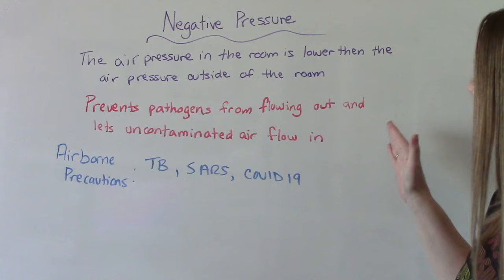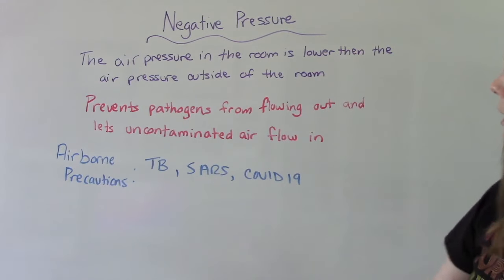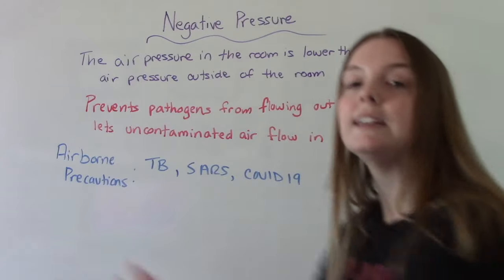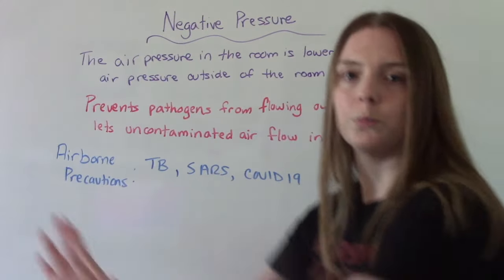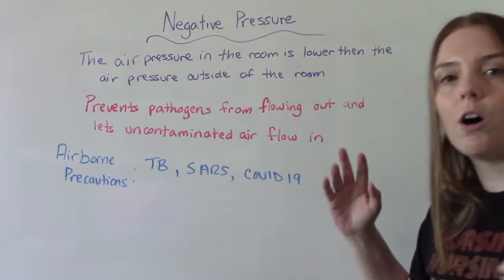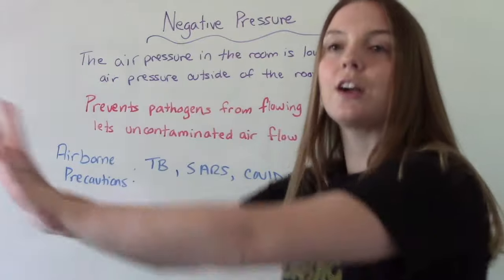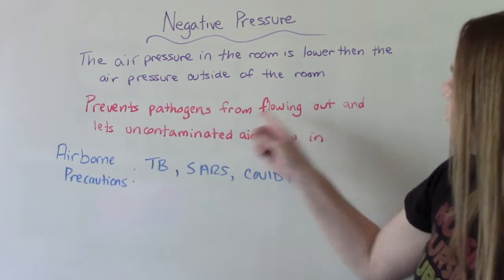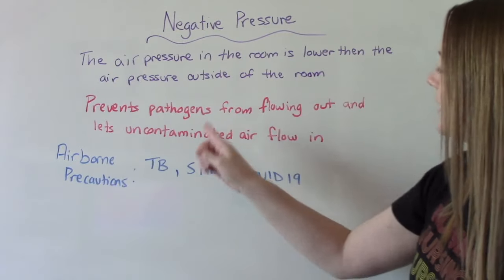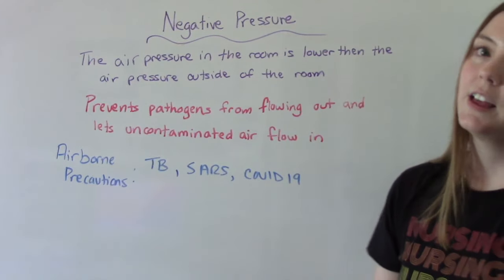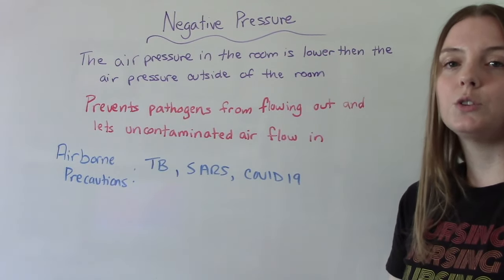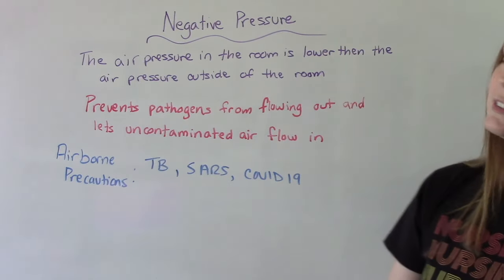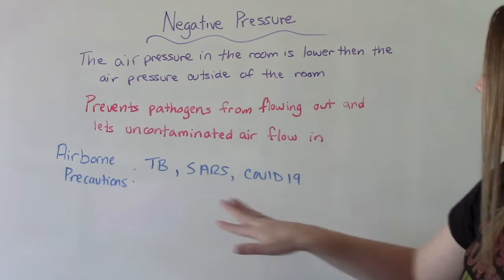It also helps when we open that door to have that uncontaminated air — that outside air — go into the room, almost like a vacuum. So the patient is also exposed to that good, clean air. It prevents pathogens from flowing out and lets uncontaminated air flow in. These rooms are typically used for patients who are on airborne precautions for things like tuberculosis, SARS, and COVID.